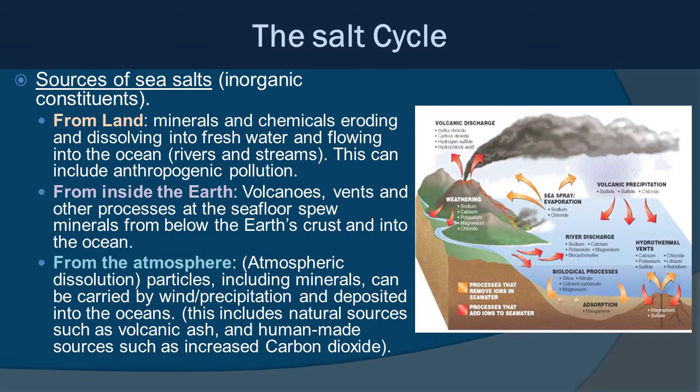The salt cycle is an important concept. The ocean isn't getting saltier because there's a balance of processes that add salts and processes that remove them. Sources of sea salts come from three places: from land, minerals and chemicals that erode and dissolve into fresh water and flow into the ocean through rivers and streams — this can include anthropogenic pollution; from inside the earth, volcanoes and vents at the sea floor that spew minerals from below the earth's crust; and from the atmosphere, particles including minerals carried by wind and precipitation deposited into the ocean, including volcanic ash and increased CO₂.